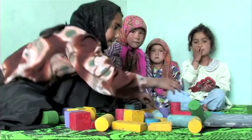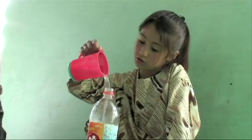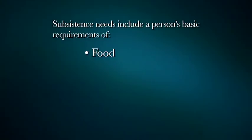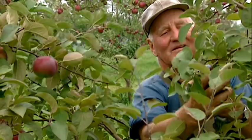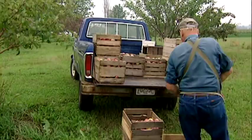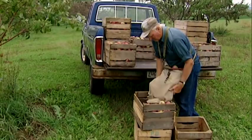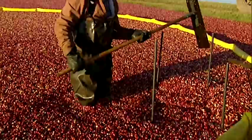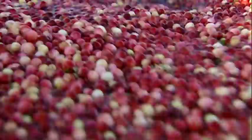The study of economy begins with understanding that everyone has subsistent needs. Subsistent needs include a person's basic requirement of food, water, shelter, and clothing. Subsistent needs are necessary for survival. Some people produce goods on a small scale for personal consumption, while others create their goods or services on a large scale for mass production. But regardless of the scale, a person's survival depends on meeting subsistent needs before trying to obtain personal wants.